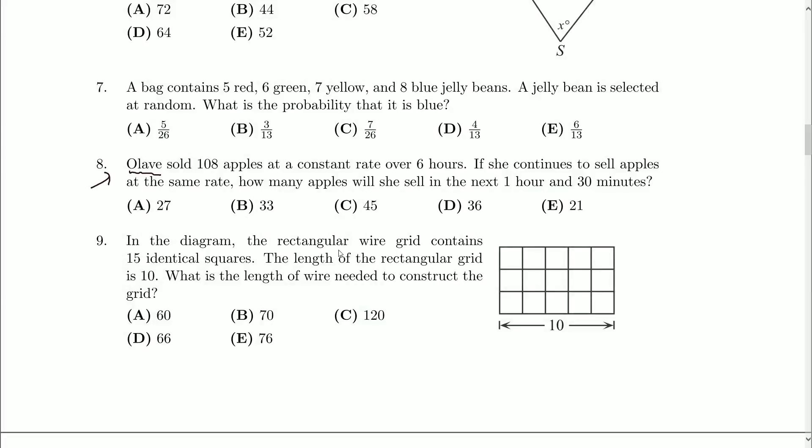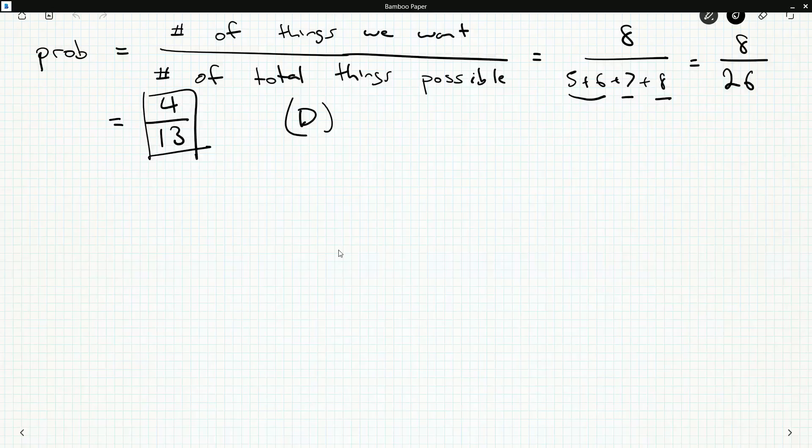Well, we know how many apples Olav sells over six hours, so we can figure out how many apples per hour. We know how much an hour and 30 minutes is. Thirty minutes is half an hour, because of course there's 60 minutes in an hour and 30 is half of 60. So we just multiply the constant rate by an hour and a half.